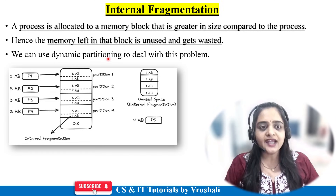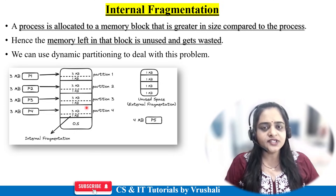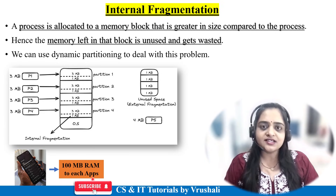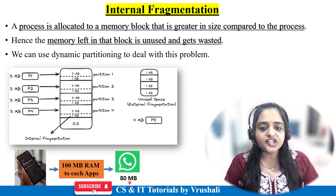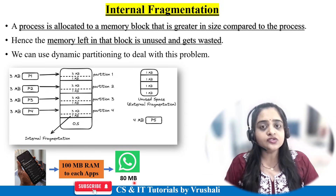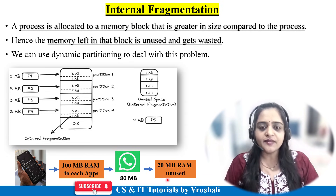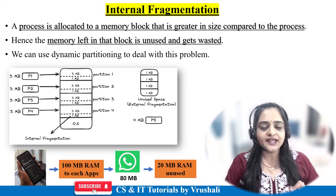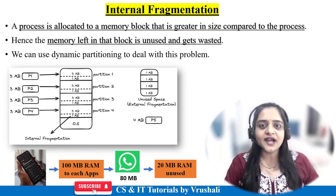The solution for internal fragmentation is dynamic partitioning. Here is another example: suppose in your mobile every application is allotted 100MB RAM. When you install WhatsApp but WhatsApp requires only 80MB of memory, from 100MB they use only 80MB for execution. The remaining 20MB is unused — this is called internal fragmentation. That is why every application in your mobile uses dynamic partitioning memory.